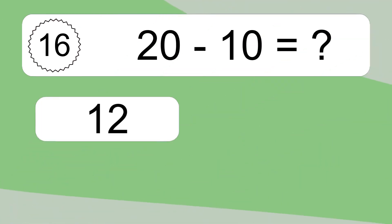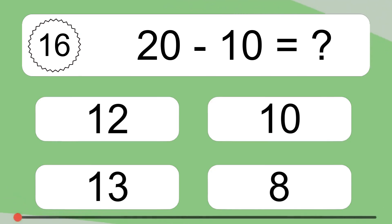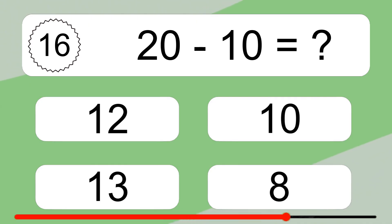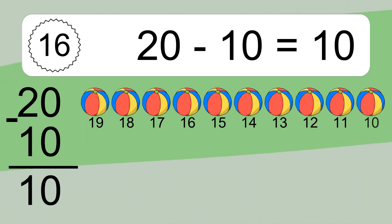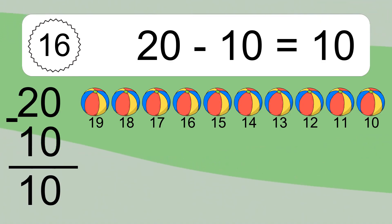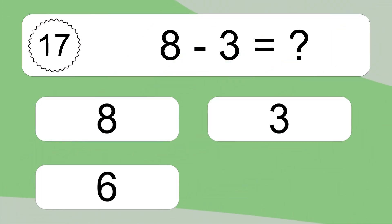20 minus 10 equals 10. Let's count it: 19, 18, 17, 16, 15, 14, 13, 12, 11, 10.